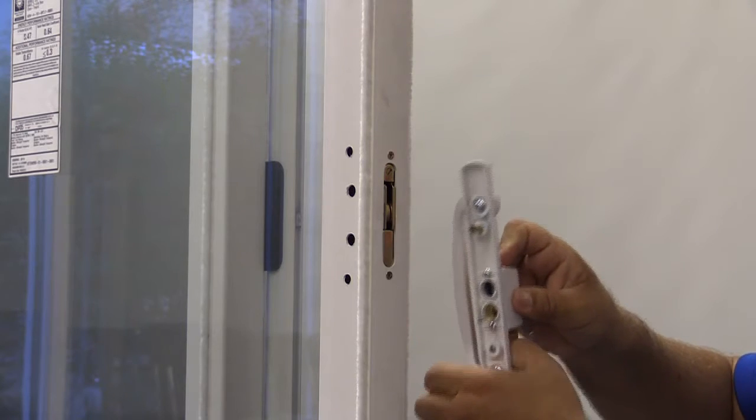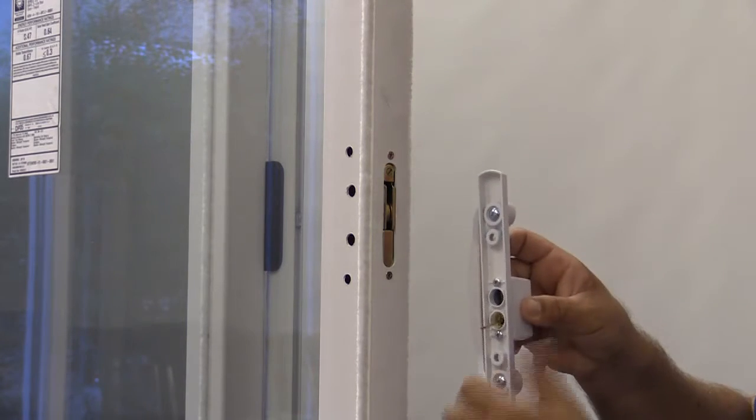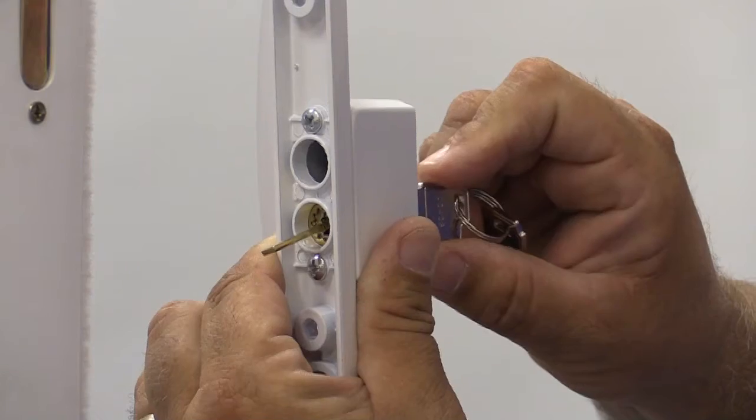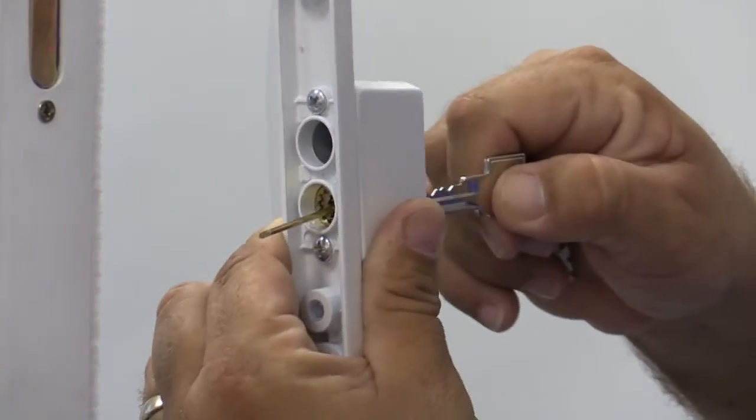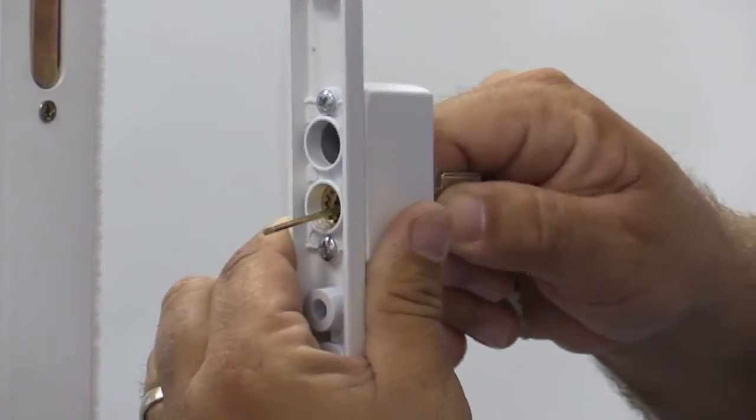You will notice we removed the screw barrels to be re-inserted later. Turn the key until it releases. This is the correct position for the tumbler that it should be in when we re-attach it.